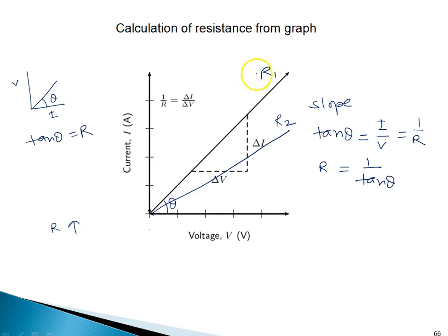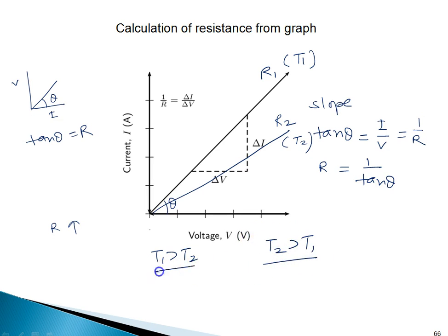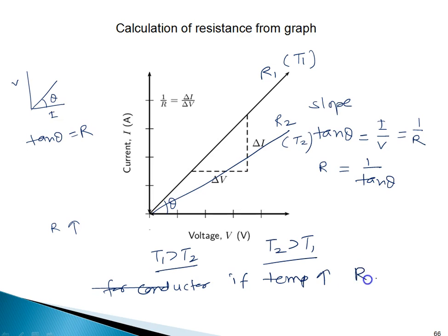Similarly, consider a conductor at temperature T1 and the same conductor at temperature T2. For a conductor, if we increase the temperature, the resistance also increases. So if R2 is more than R1, then T2 is more than T1.